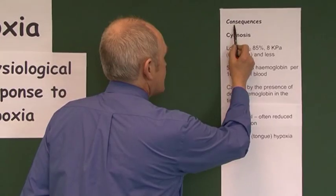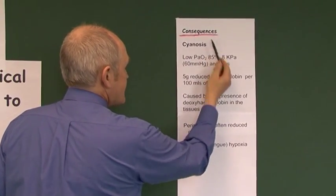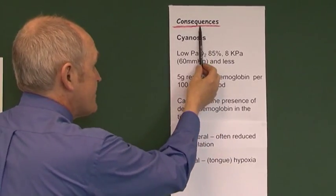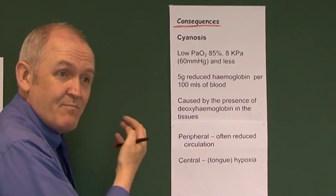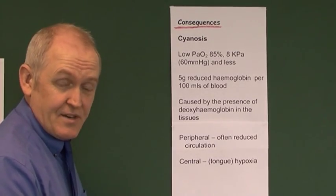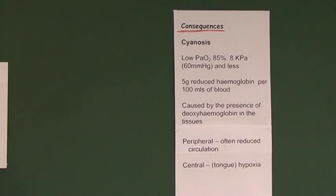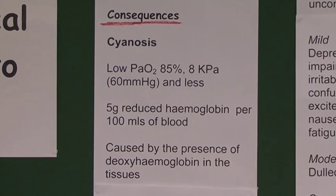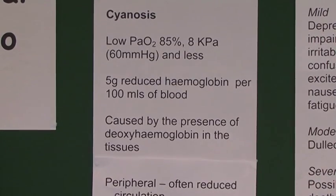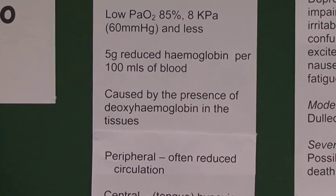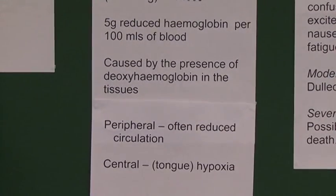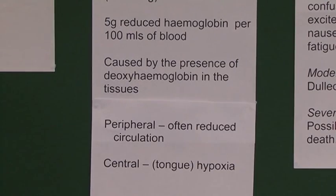So we're still talking about consequences of hypoxia — clinical features we need to recognise — but things that happen as a consequence of the hypoxia, not as the body's attempted compensation for it. It's also useful to be able to distinguish between peripheral cyanosis and central cyanosis.